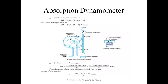Next is rope brake type of dynamometer. In this case, the disc is attached to the output shaft of the engine, and this disc is surrounded by a rope which has wooden blocks attached at intermediate points. In order to avoid maximum heat generation, a cooling water jacket is provided. One end of the rope is attached to the load and another end is attached to a spring balance.